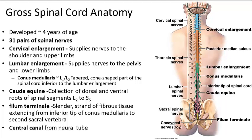Because the adult spinal cord ends at the level of the first or second lumbar vertebra, the dorsal and ventral roots of spinal cord segments L2 through S5 extend inferiorly below that point. In gross dissection, the filum terminale and the long ventral and dorsal roots resemble a horse's tail — hence this region is known as the cauda equina. The filum terminale is a slender strand of fibrous tissue extending from the tip of the conus medullaris to the second sacral vertebra, providing longitudinal support as part of the coccygeal ligament.